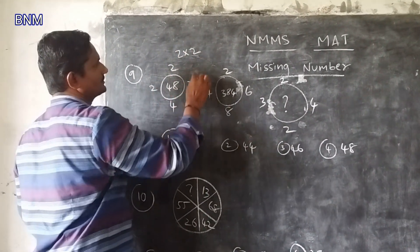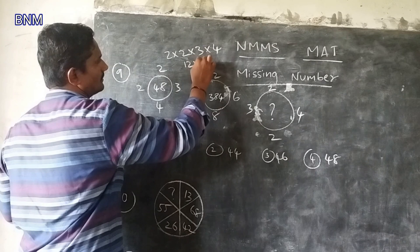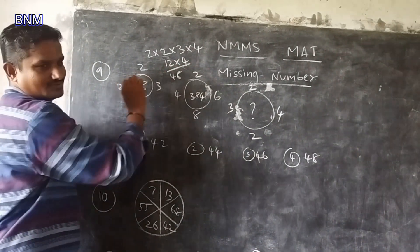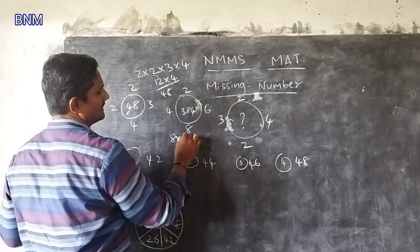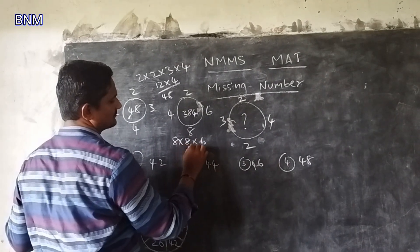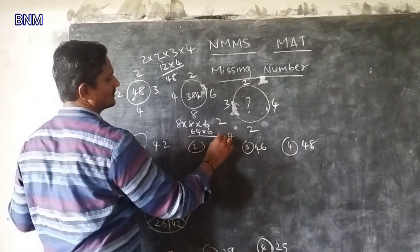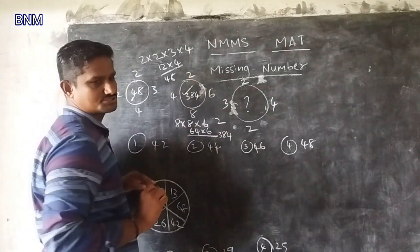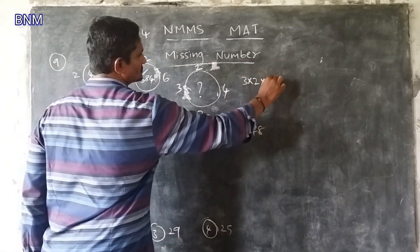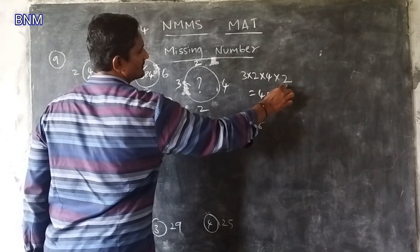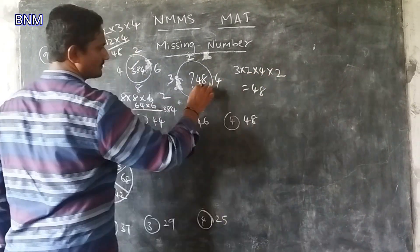2 into 2 into 3 into 4. 2 twos are 4, 4 threes are 12, 12 fours are 48. 4 twos are 8, 8 eights are 64 into 6. 64 into 6, 2 into 6. 2 add to 8. Now multiply 3 into 2. 2 twos are 6, 4s are 24, 24 twos are 48. 4 twos are 8, 8 twos are 16, 16 threes are 48. 48. 9, 9, 9, 9. 4th option — right answer.